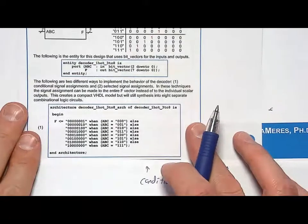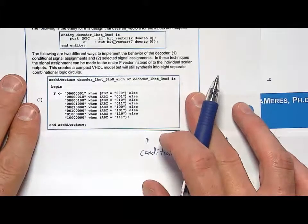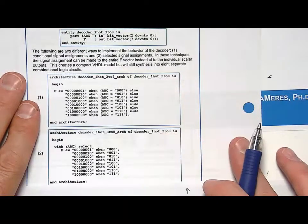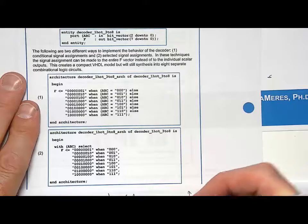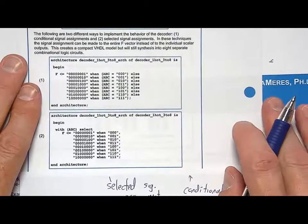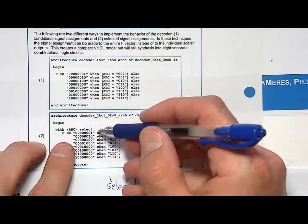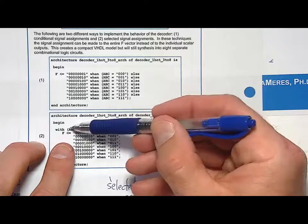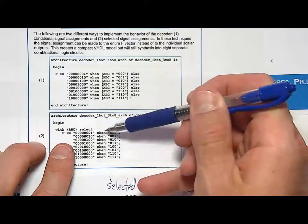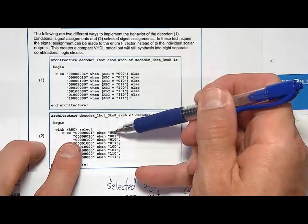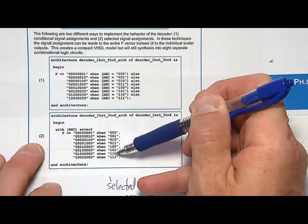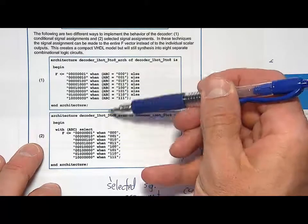Now let's look at a selected signal assignment which gives the same behavior. So in a selected signal assignment it's even a more compact approach. So this would be a selected signal assignment. And in this situation we have less text because, this is a selected signal assignment. In this situation you don't have to list out the input variables. So you just say with ABC select. And so then you can say when the input code is 0, 0, 0, assign F that code. So you can list them all down and it's even more compact.